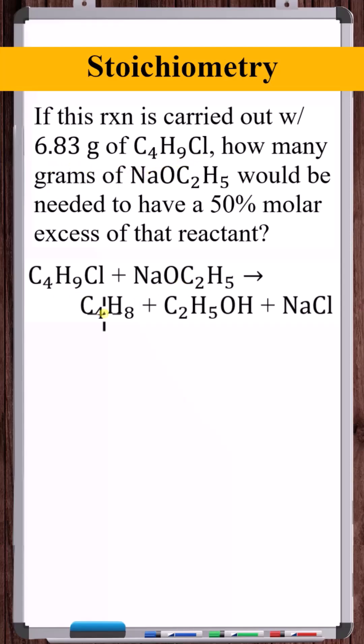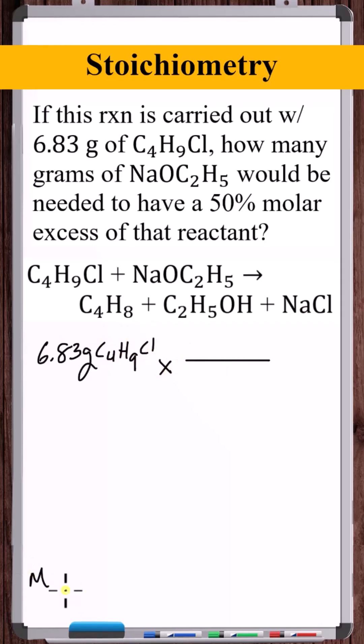This equation is already balanced, and we're starting off with 6.83 grams of C4H9Cl. To convert this to moles, we need the molar mass. Molar mass of C4H9Cl: